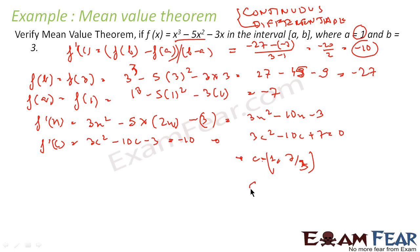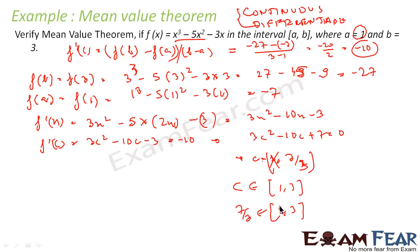Now if MVT is correct, c should be part of the open interval (1, 3). If you see, c = 1 is not part of the open interval (1, 3) since that endpoint is excluded. But c = 7/3 — yes, 7/3 belongs to (1, 3). So 7/3 is the only point where f'(c) = -10. Thus I have proved my MVT — we found c = 7/3 which satisfies the required condition.